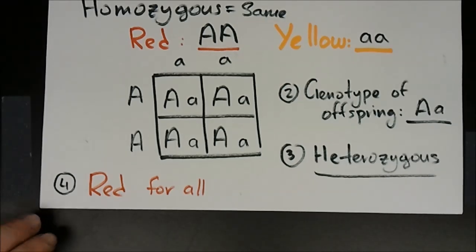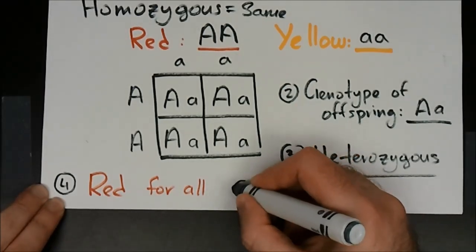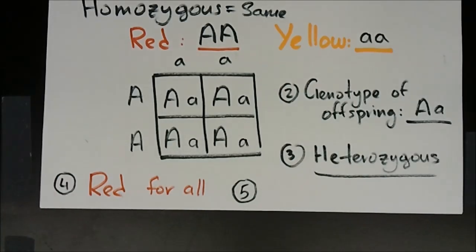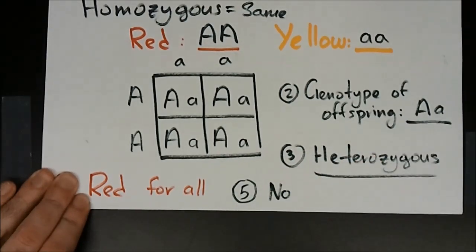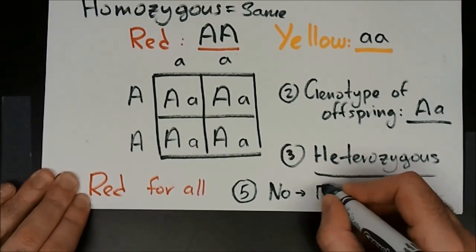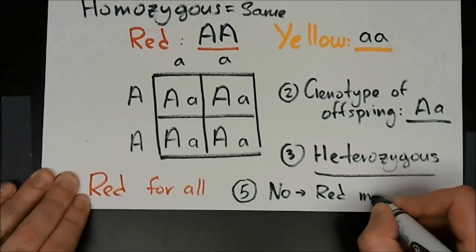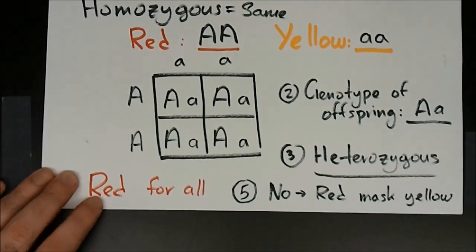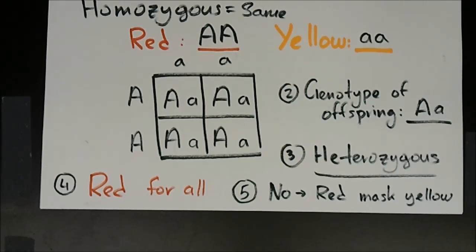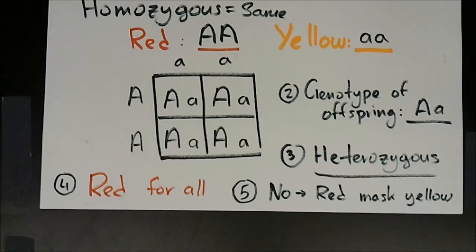Question five: did the recessive color appear in the offspring? No — no yellow. As long as the red dominant allele is present you will not see the recessive yellow. The dominant allele masks the recessive, so the yellow simply doesn't show up.